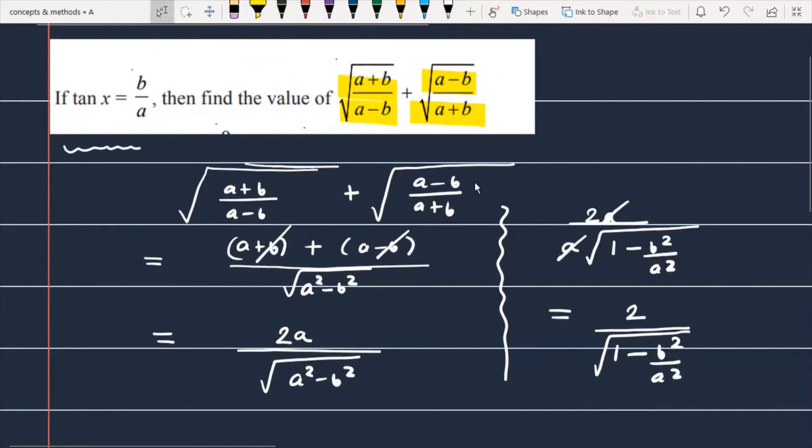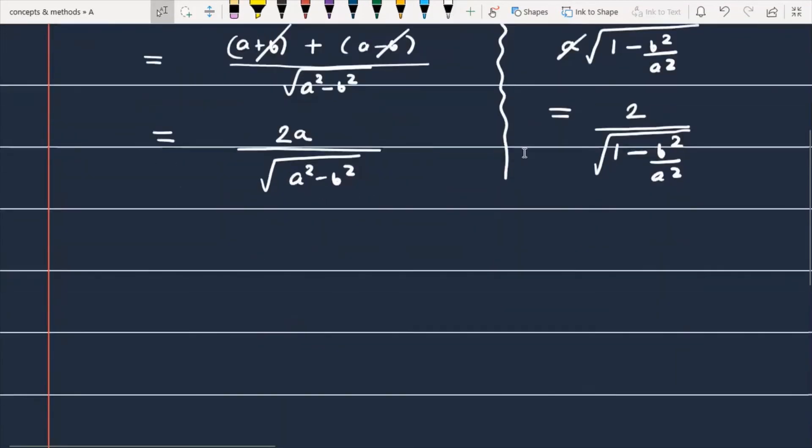You can easily check the question. It is provided that tan x = b/a. We will replace b/a with tan x, so this becomes 2/√(1 - (b/a)²), or we can write 2/√(1 - tan²x).